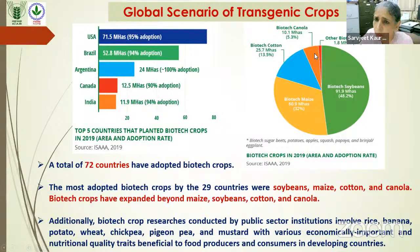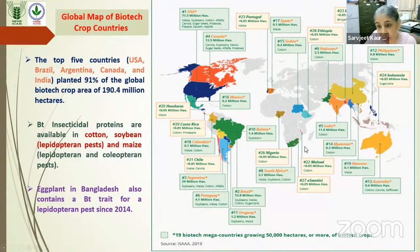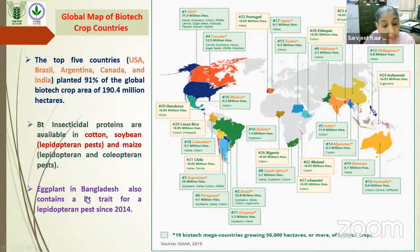Overall, 72 countries have adopted biotech crops, with major crops being soybean, maize, cotton, and canola. A lot of research in both public and private sectors is ongoing. This global map of biotech crop countries shows India is also a significant area, with most of India's cotton area covered by biotech crops. In Bangladesh, interestingly, biotech brinjal (Bt eggplant) was given approval for commercial cultivation since 2020, while in India there is more debate on this.